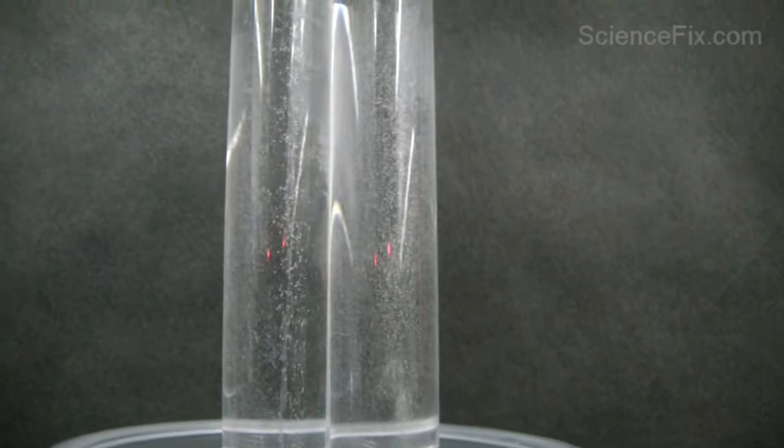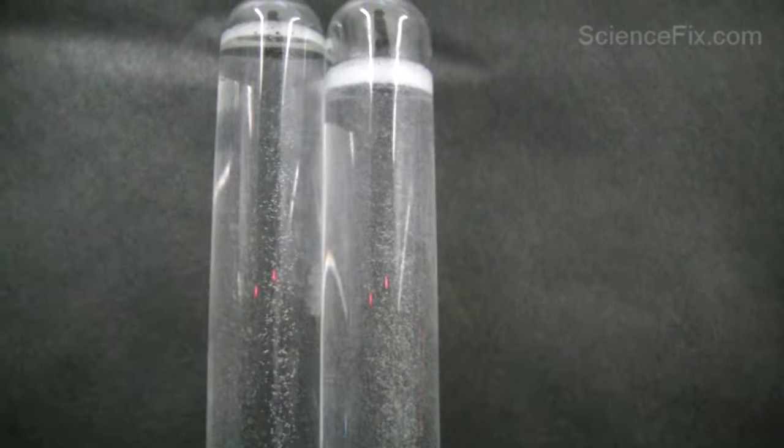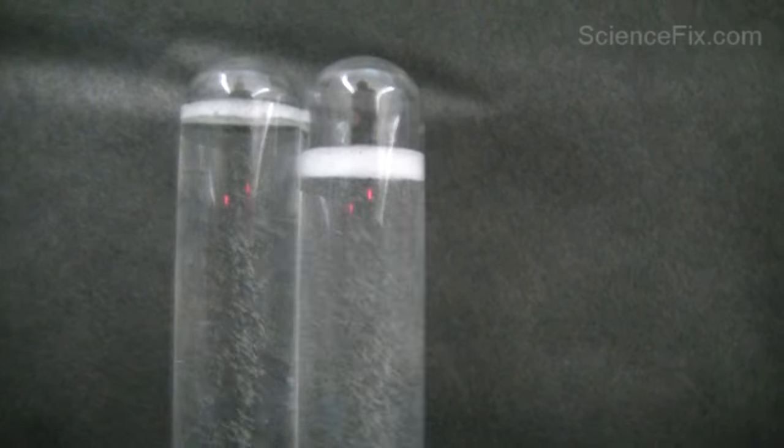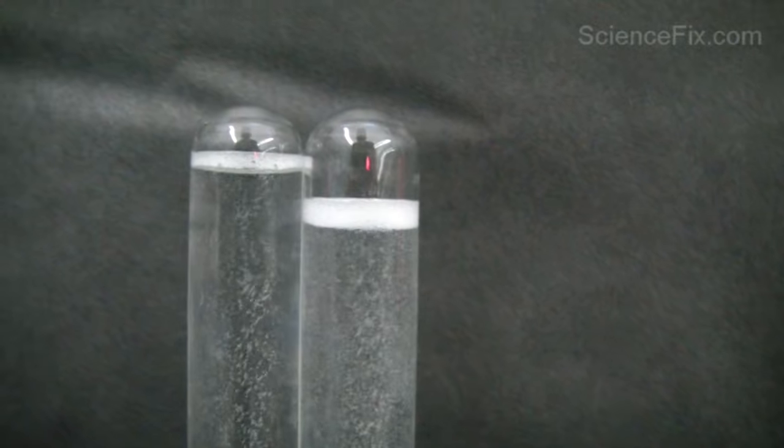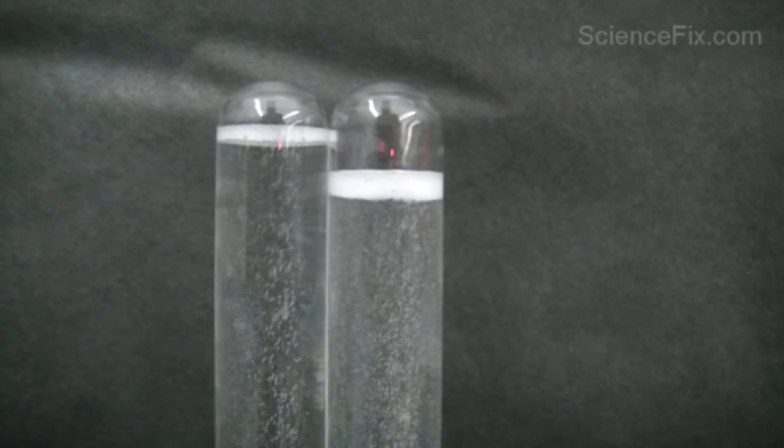How do you know which one's which? If you take a look at the amount of gas in each test tube, it's going to be twice as much hydrogen gas as oxygen gas. You can see in the right test tube you have twice as much hydrogen gas as oxygen gas.